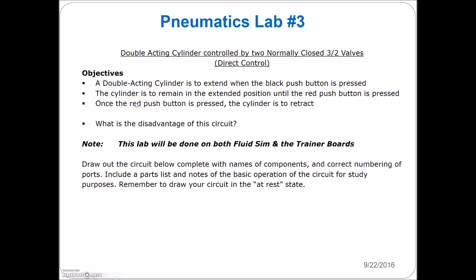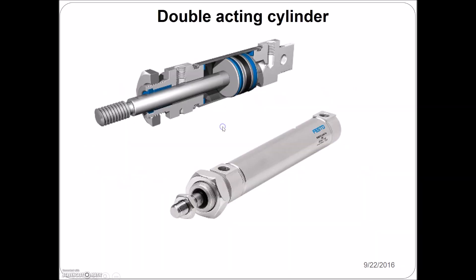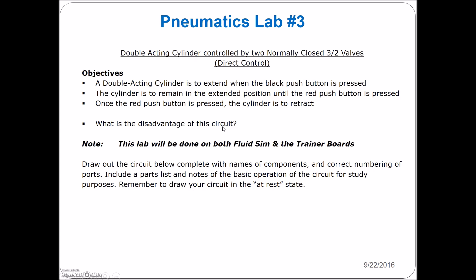It says that the double-acting cylinder is going to extend when the black push button is pushed, and the cylinder is going to remain in the extended position until the red push button is pressed. Once the red push button is pressed, the cylinder is going to retract. So black is going to extend, red is going to retract. But there's an issue with this circuit. What's the disadvantage of this circuit? It's going to work, but there's going to be some issues.